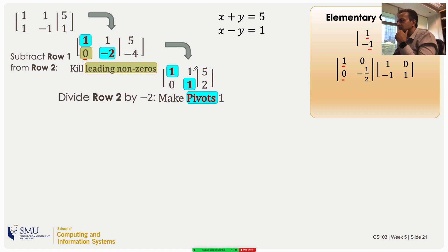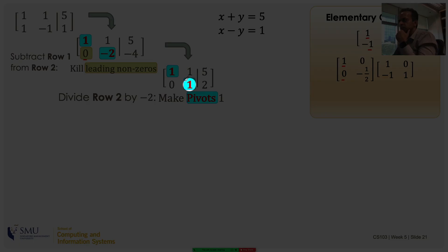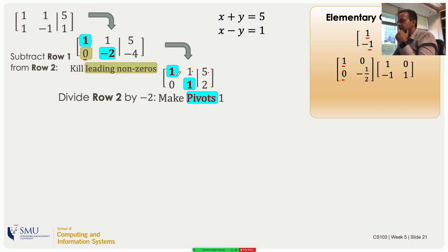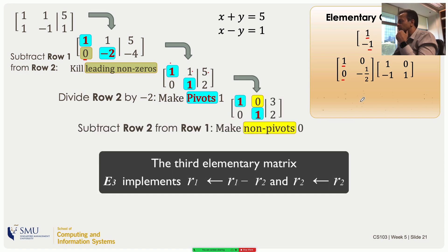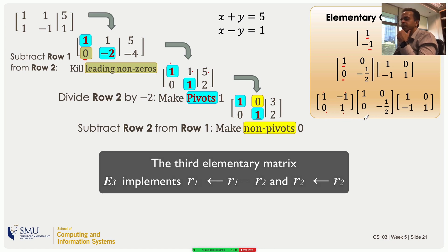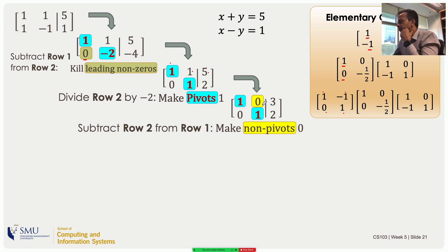The second objective is to eliminate all elements above each pivot. Using the pivot in the second row, subtract the second row from the first row — the one above the pivot becomes zero. The first pivot is unaffected since everything below it is already zero. That is the third elementary operation: row 1 becomes row 1 minus 1 times row 2, and row 2 is unchanged.